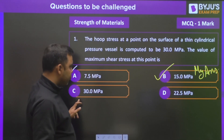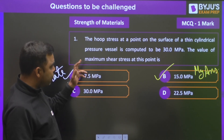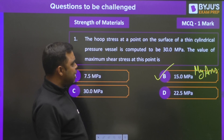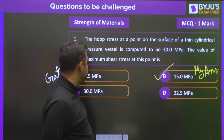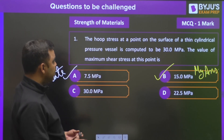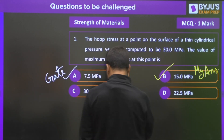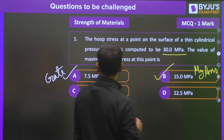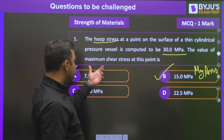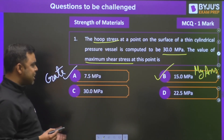Let's move to the first question from the morning shift. The question states: the hoop stress at a point on the surface of a thin cylinder pressure vessel is computed to be 30 MPa. Find the value of maximum shear stress at this point.